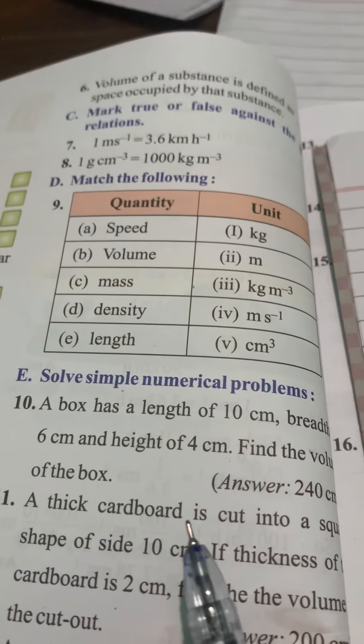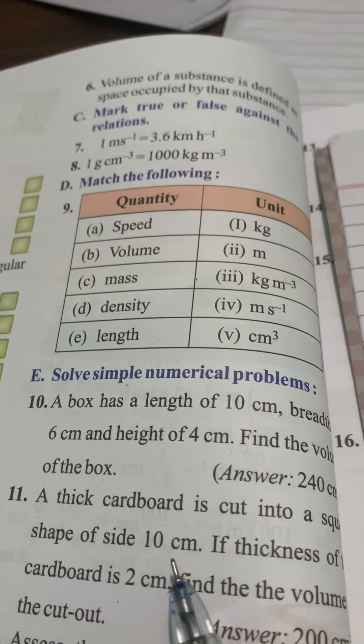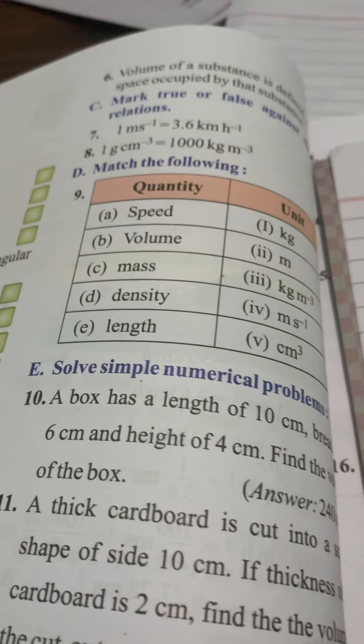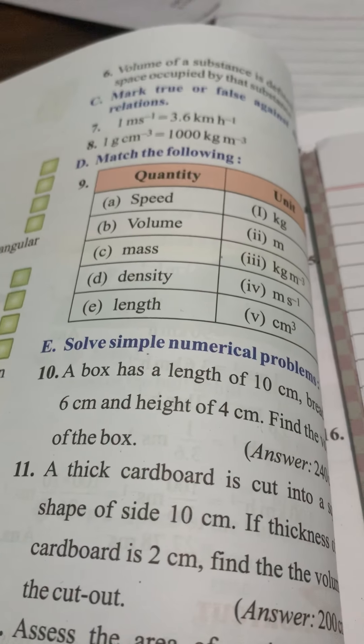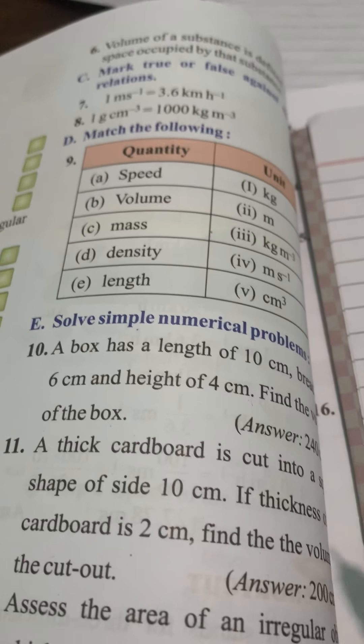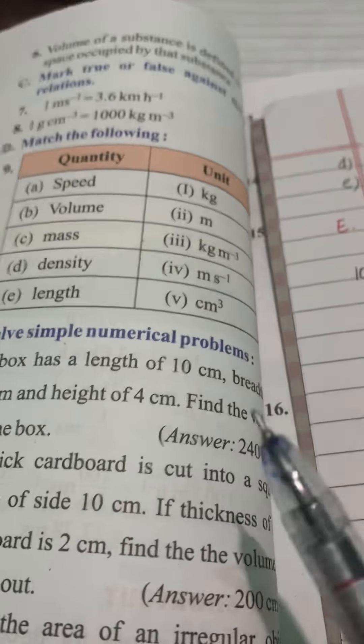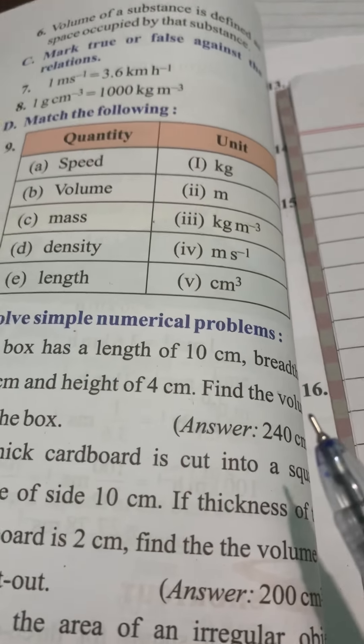See the next. A thick cardboard is cut into a square shape of side 10 cm. One cardboard is there. You have cut it into a square shape whose side is 10 cm. Everybody knows that the square has all the 4 sides equal means all the 4 sides are of 10 cm. If the thickness of the cardboard is 2 cm find the volume. A thickness word is used here.